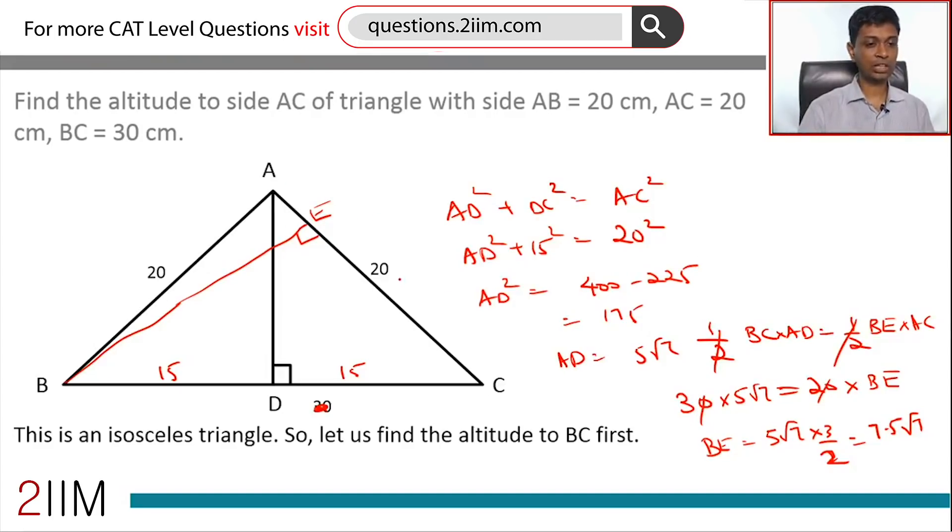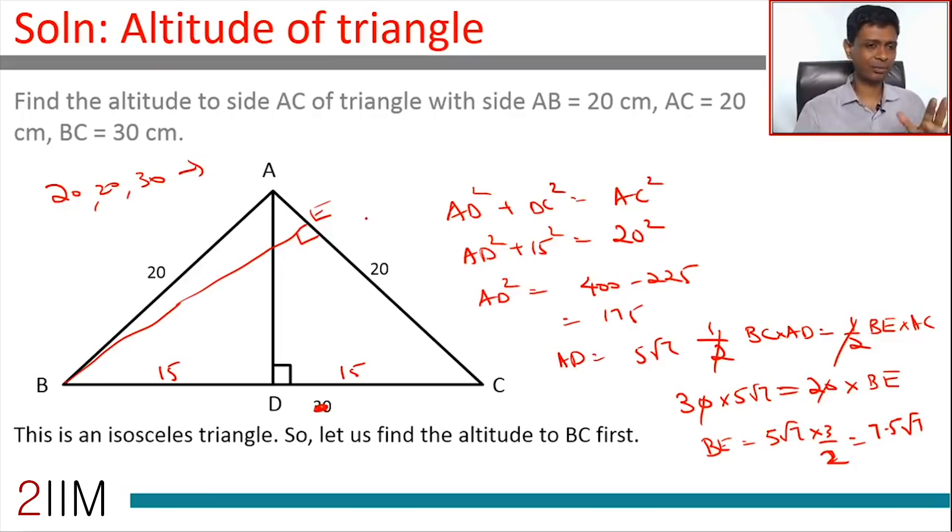E lies outside AC. It's an obtuse angle triangle, 20, 20, 30. That's an obtuse angle triangle. Should not depict that. That's not going to change anything. You'll still get the right answer. BE is 7.5√7.